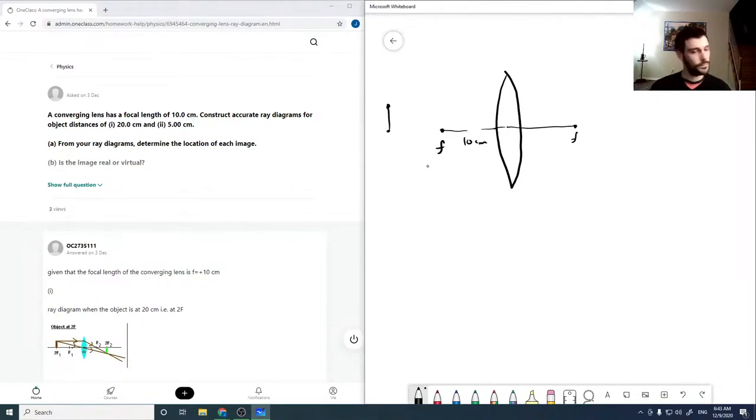And so the way we're going to draw this is we can sketch three rays. So a ray which goes straight is going to pass through the focal point.